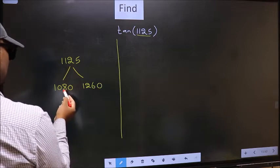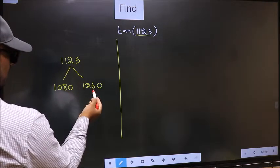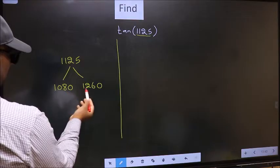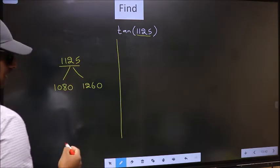This is 180 times 6 and this is 180 times 7. Between these two numbers 1125 lies.